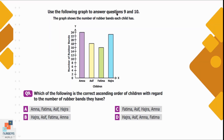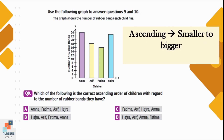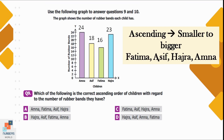Use the following graph to answer questions 9 and 10. The graph shows the number of rubber bands each child has. Question number 9: Which is the correct ascending order of children by number of rubber bands? Ascending order means smaller to bigger. Amna has 24, Asif has 18, Fatima has 16, and Hajra has 23 rubber bands. Arranged in ascending order: Fatima, Asif, Hajra, Amna — which is option C.